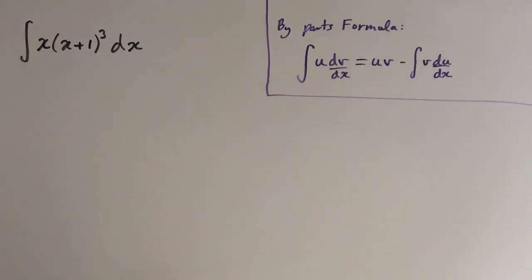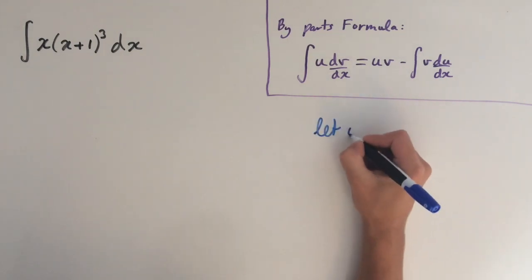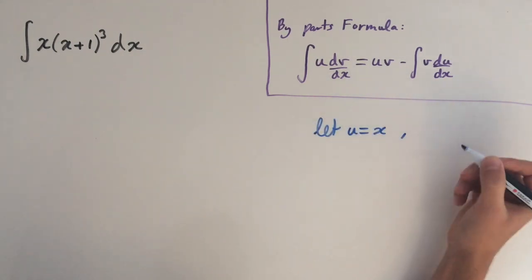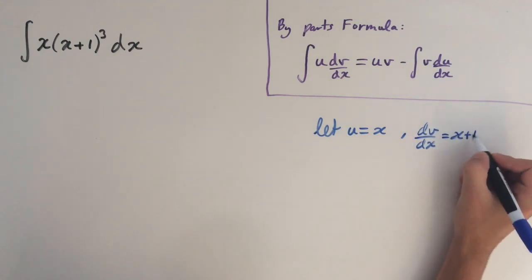Hey guys, in this video I'll be showing you how to integrate x times x plus 1 cubed. We'll be doing this by parts. So I've written out the by parts formula up here. And we're going to let u equal x and dv dx equal x plus 1 cubed.